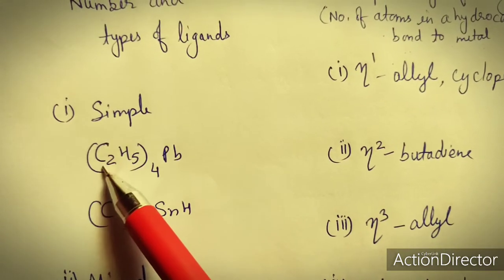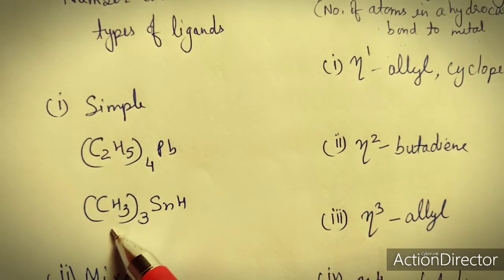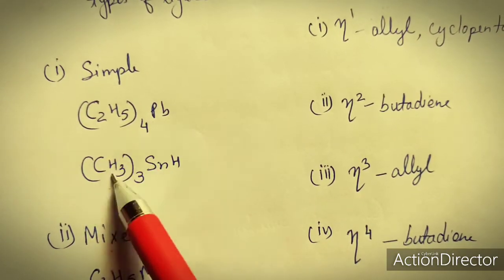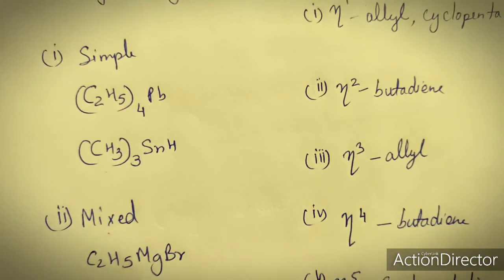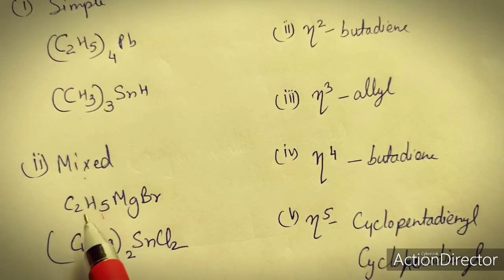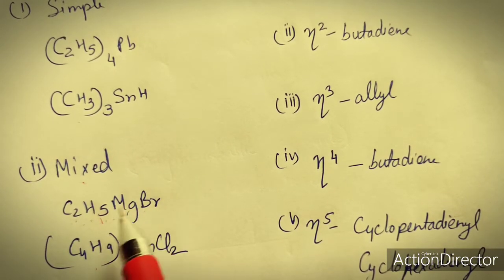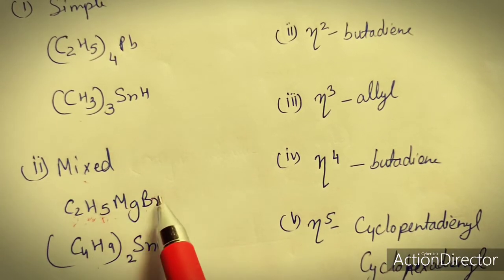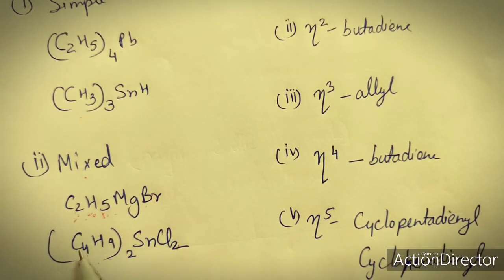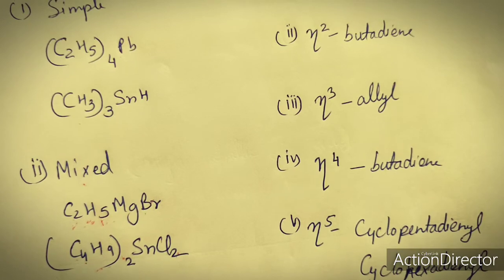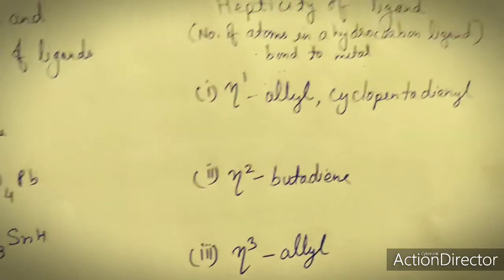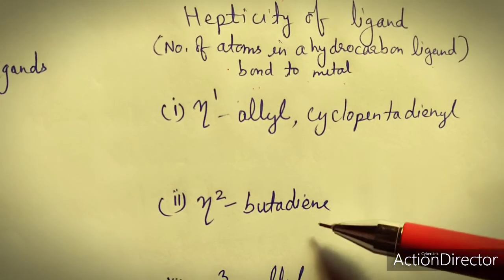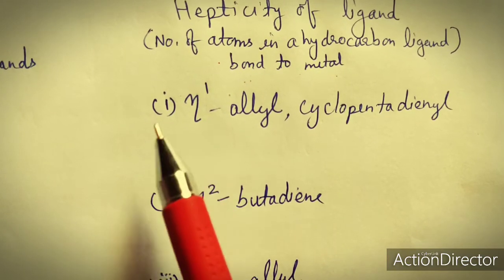In the case of simple organometallic compounds, examples include tetraethyl lead and (CH3)3NSH, where the organic ligand is of one type. In mixed-type compounds, the Grignard reagent C2H5MgBr is an example, where there are two types of ligands such as C2H5 and Br or Cl. Based on hapticity, these ligands and the corresponding organometallic compounds can be further classified and named accordingly.